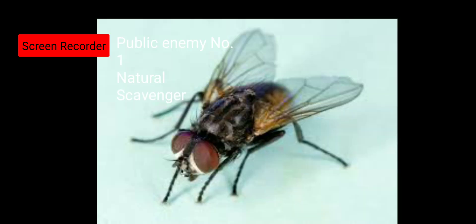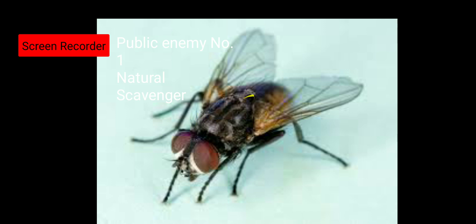This is a housefly. You must have commonly observed this housefly in your surrounding. This part of the housefly is the head, this part is the thorax, and this part is the abdomen. The housefly has a compound eye and a plant proboscis. You can observe the body of the housefly, and the legs of the housefly are hairy.